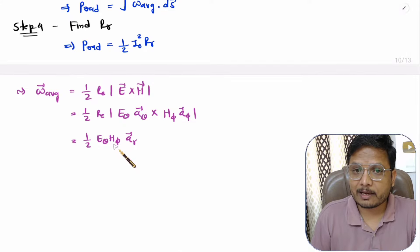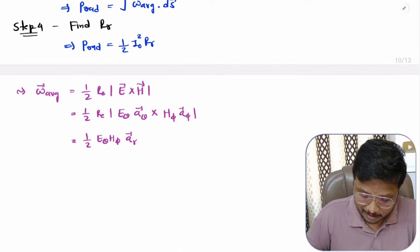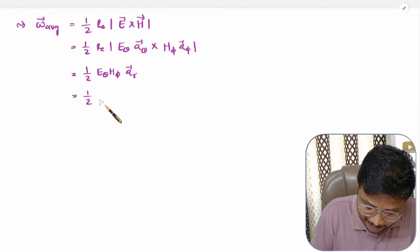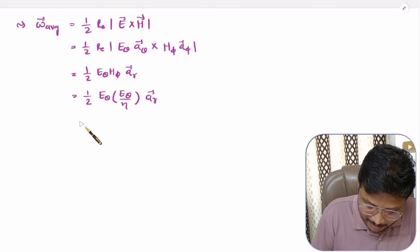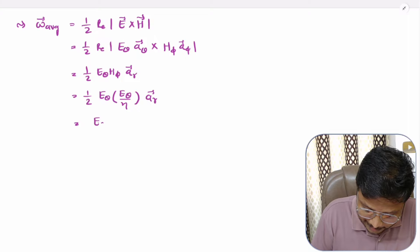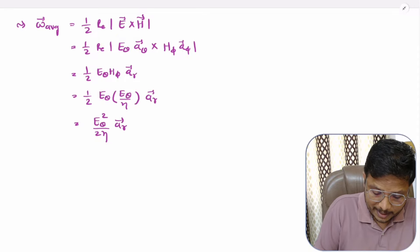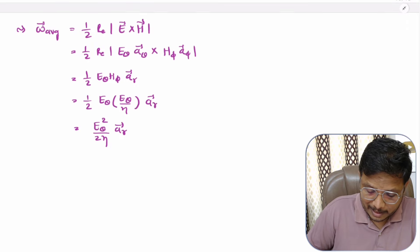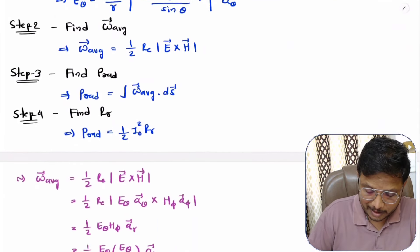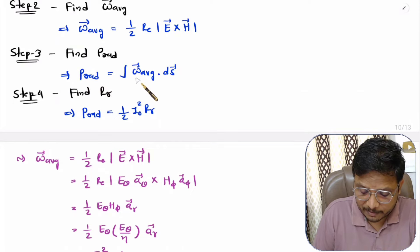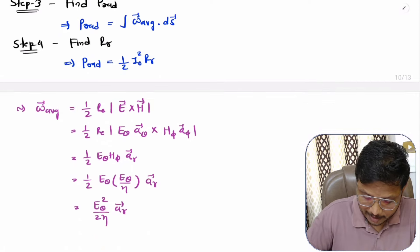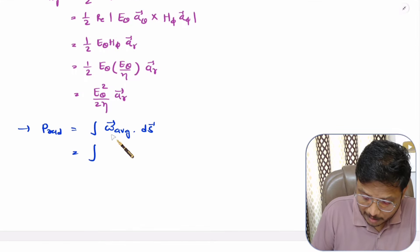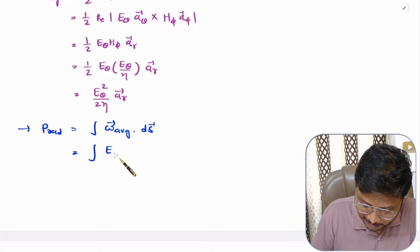Since H_phi = E_theta / η (the intrinsic impedance), we have the average power density equal to E_theta² / (2η) in the direction of a_r, where E_theta is given by the formula above.